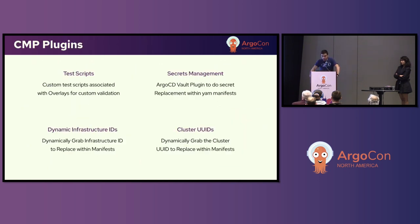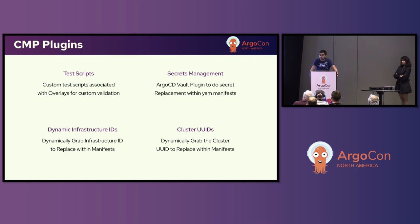Some of the plugins we're currently using today are for secrets management. We're using the Argo CD Vault plugin to pull secrets from Secret Manager, so our YAMLs only have references to secrets and not secrets themselves in GitHub. We have two other plugins for pulling information directly from the cluster: the infrastructure ID and the unique identifier for the cluster. Those are not known ahead of time with IPI installs, so they're generated dynamically and our YAMLs can't contain them in GitHub. The last plugin is a simple framework for testing the YAMLs.